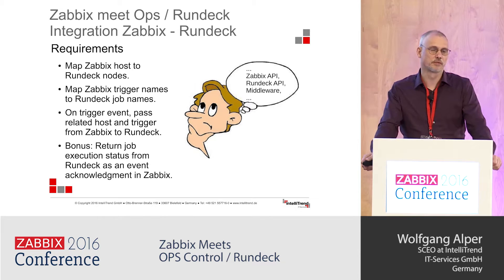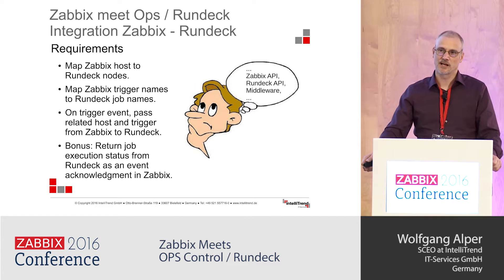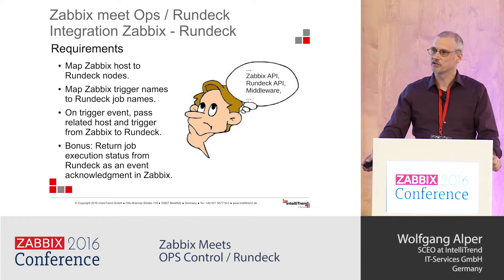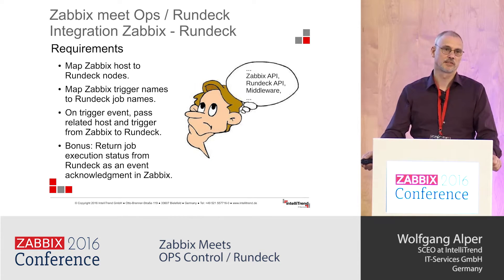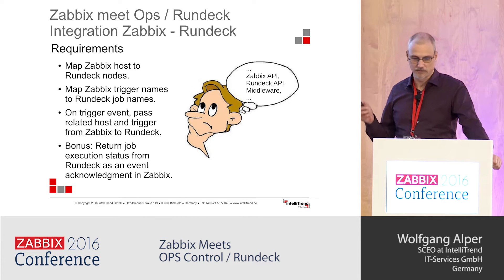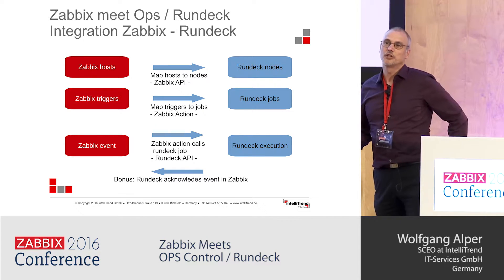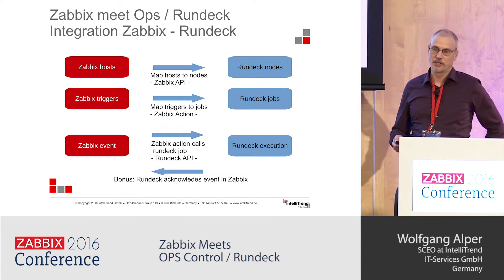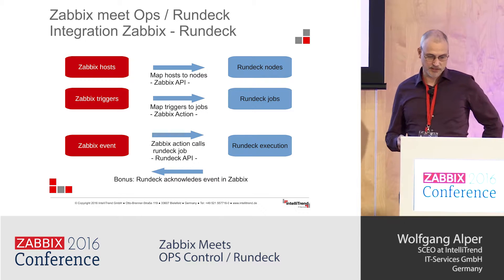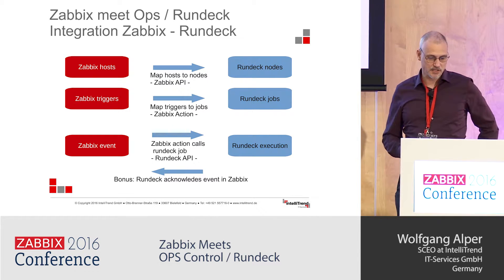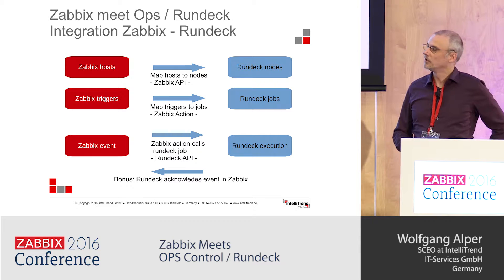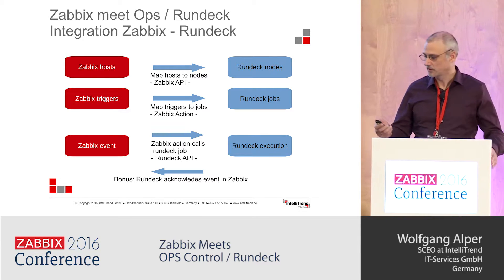The bonus would be if our task runner returned the result of the execution as an acknowledgement in Zabbix, so our support guys know that this job is running or has run, has executed, with the corresponding result state. It would also be helpful to have the log output available. Basically what we do is take the Zabbix host and use the Zabbix API to map host names to Rundeck nodes, use the Zabbix action to map triggers to job names in Rundeck, and use Zabbix action calls to initiate a Rundeck API call that in turn executes the proper job.